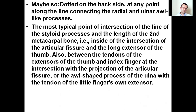The puncture site may also be marked on the dorsal side at any point along the line connecting the radial and ulnar styloid processes. The most typical point is the intersection of the styloid process line with the second metacarpal bone — between the tendons of the long extensor of the thumb and the extensor of the index finger, or at the styloid process of the ulna at the tendon of the little finger extensor.